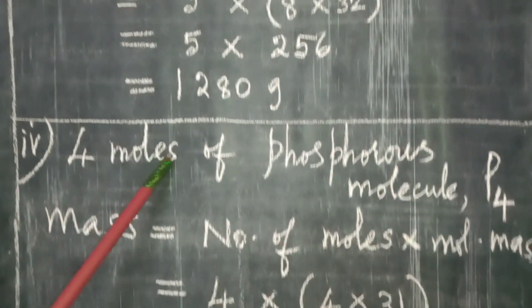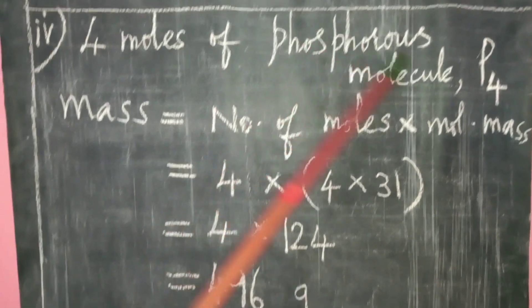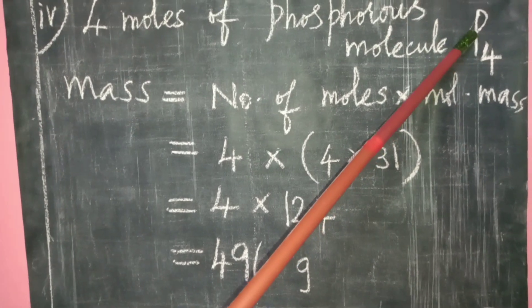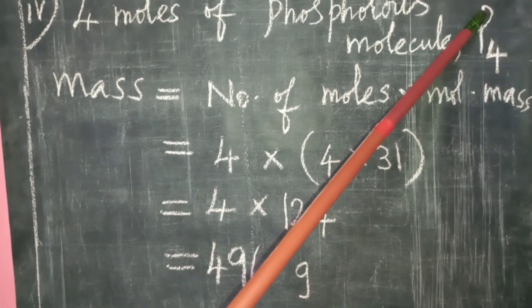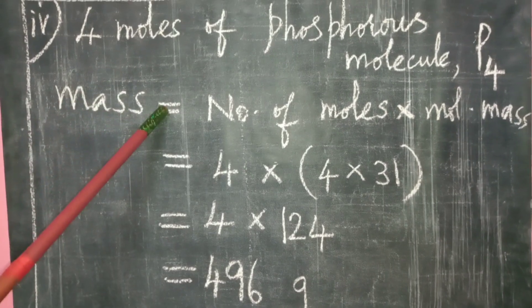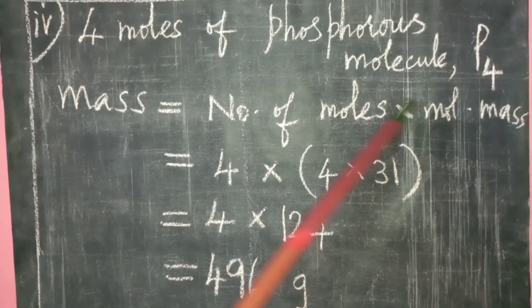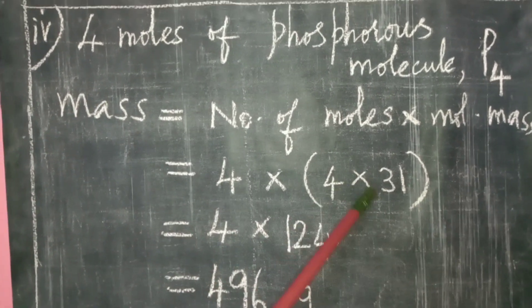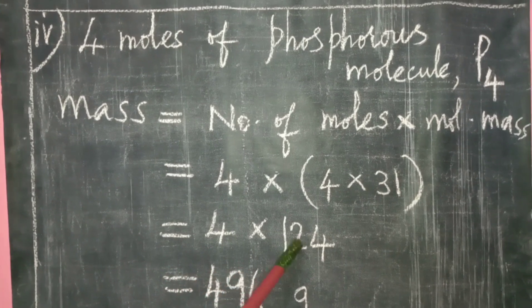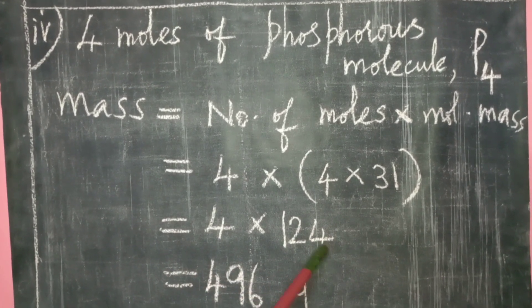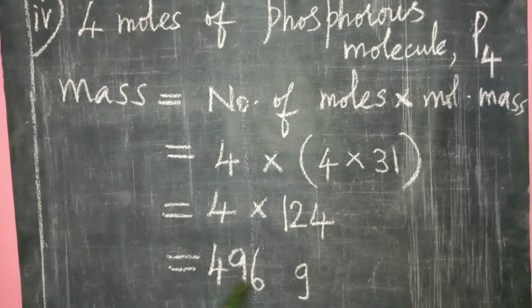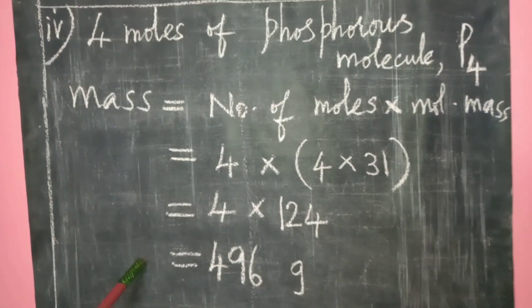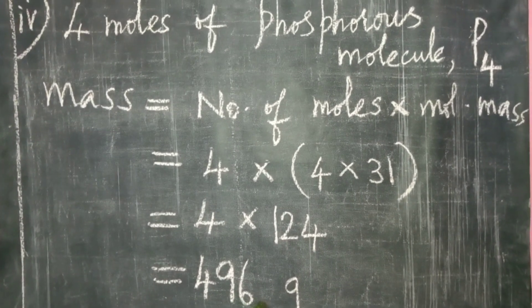Fourth: 4 moles of phosphorus molecule, P₄. The atomic mass of phosphorus is 31, so 4×31 = 124. Mass = number of moles × molecular mass = 4 × 124 = 496 grams. Mass must be expressed in grams.